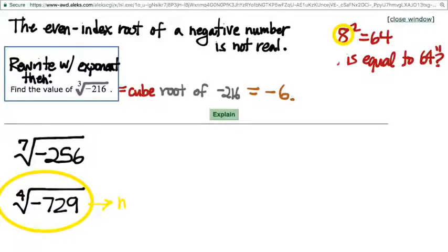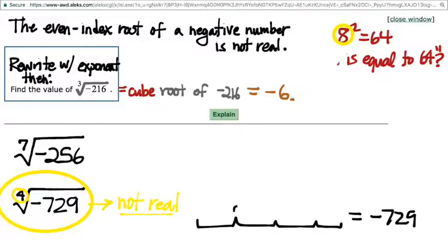The bottom one's not real, because the index is even. What is the index here? It's four. Not real, because the index is even. Again, if you want to persuade yourself even further, just imagine the problem as asking, how do I multiply the same number by itself four times and get negative 729? Right?